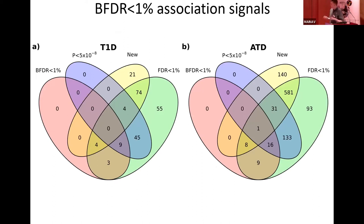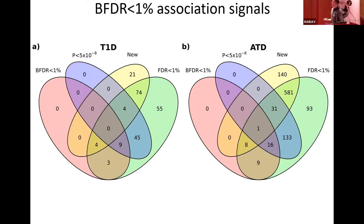Breaking it down into independent association signals via LD clumping, these Venn diagrams show SNPs satisfying the BFDR (purple), genome-wide significant SNPs (yellow), and FDR SNPs (green). Most genome-wide significant SNPs don't satisfy a BFDR of 1%; at 5% you find more, including some that don't appear in the FDR Venn diagram.